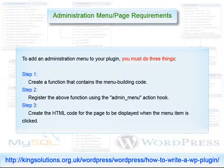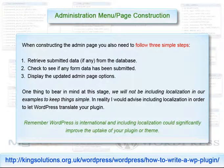Simplicity and usability can take a lot of effort. When constructing the admin page, you also need to follow three simple steps. One, retrieve submitted data, if any, from the database. Two, check to see if any form data has been submitted. Three, display the updated admin page options. One thing to bear in mind at this stage: we will not be including localization in our examples, to keep things simple. In reality, I would advise including localization in order to let WordPress translate your plugin. Remember, WordPress is international, and including localization could significantly improve the uptake of your plugin or theme.